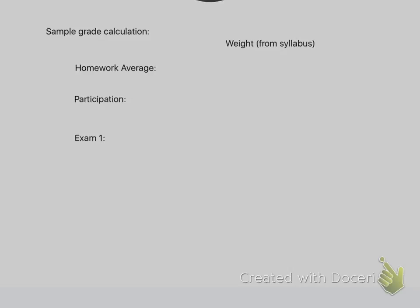Now once you have all of that information, here's what you're going to do. On the syllabus you're going to find the weights for everything, which means if homework's worth 15% for the weight, you're going to put that as a decimal, so 0.15. Participation is worth 5%, so you're going to put that as a decimal, 0.05, and so on.